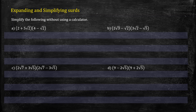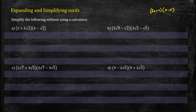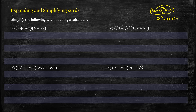In this lesson we'll learn how to expand and simplify some surds. For surds, we do them exactly as we would with any other kind of expansion. For example, if you had (2x + 3)(x - 5), we would expand this as 2x times x = 2x squared, 2x times negative 5 = minus 10x, 3 times x = 3x, and 3 times negative 5 = negative 15, which gives you 2x squared minus 7x minus 15. We just apply this method to questions that involve surds.